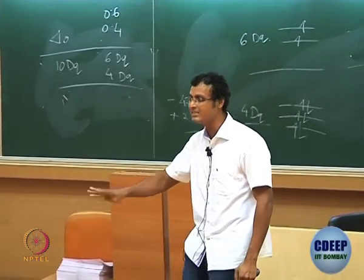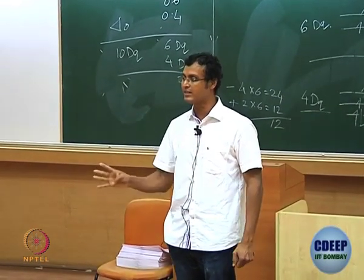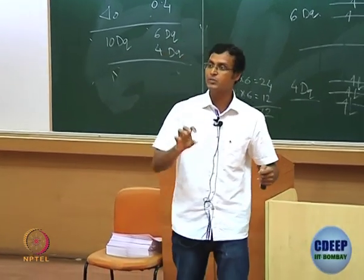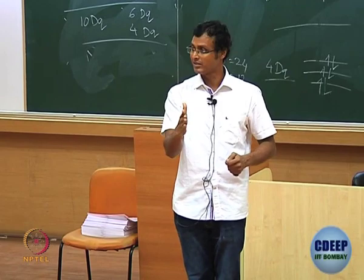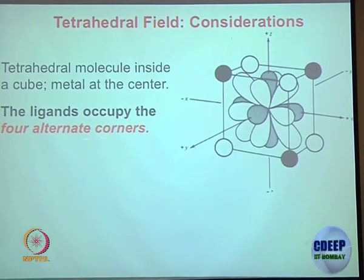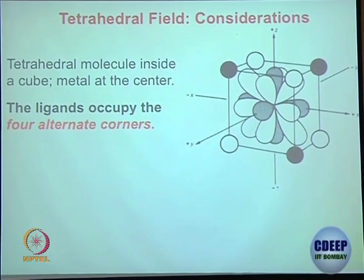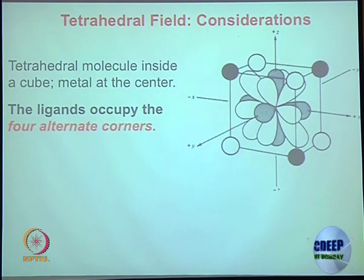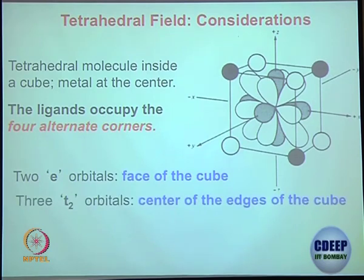The reason is very simple: the number of ligands is less, so repulsion is less — 4 versus 6. Also, the approach of the ligand with respect to the orbital is not going to be direct; it is almost a side approach. The 4 ligands occupy alternate corners, like how hydrogens are arranged in methane CH4 with carbon as the metal center. So we call them E orbitals and T2 orbitals.